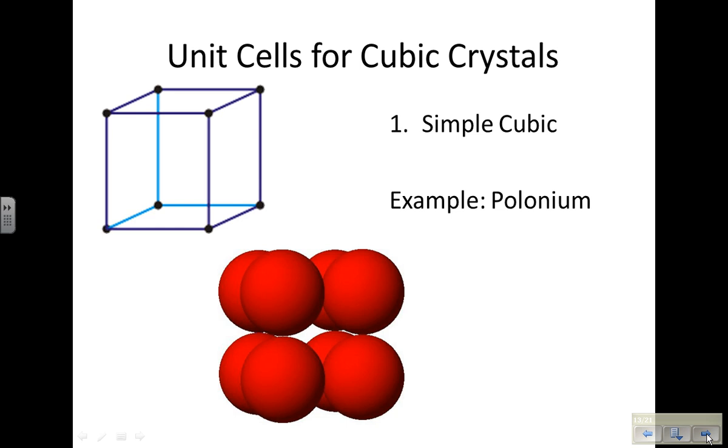Each of those crystal shapes have unit cells for them, and the unit cell is just the simplest and smallest structure that repeats itself.